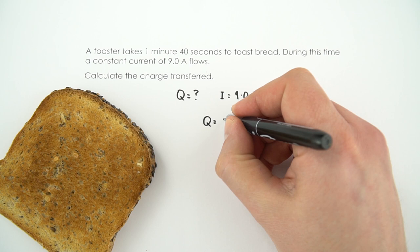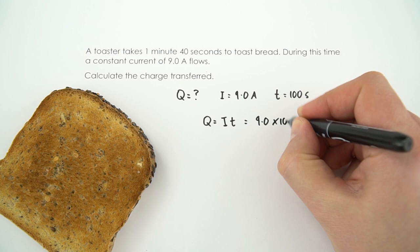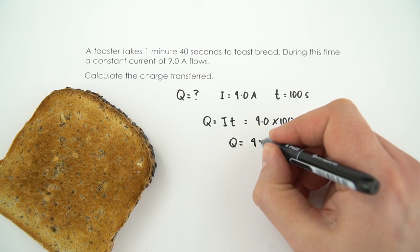We can then use the equation that Q is equal to IT, so that's going to be 9.0 multiplied by 100, and you don't need to use a calculator for this because that means the charge transferred is just 900, and the units for this are coulombs, which is a capital C.